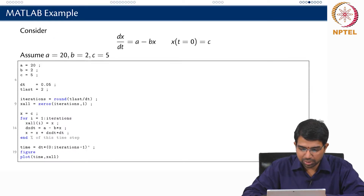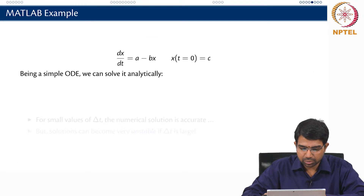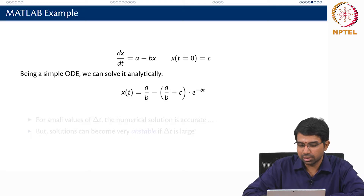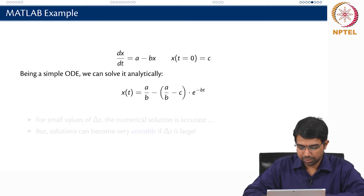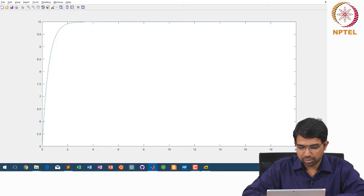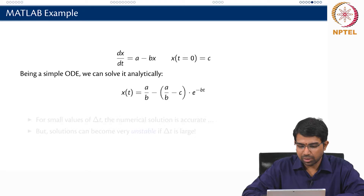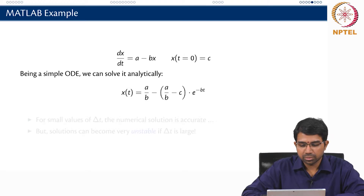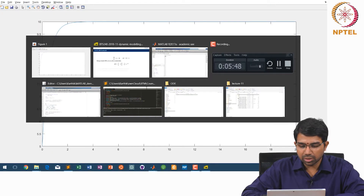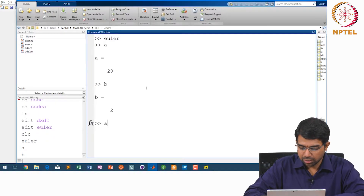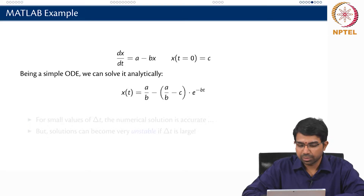If you analytically solve this, you get an exponential: alpha minus beta times e to the minus bt. The solution saturates at a/b. At t equals infinity, the exponential term vanishes leaving a/b. Since a was 20 and b is 2, a/b is therefore 10 — so x basically goes to a/b.